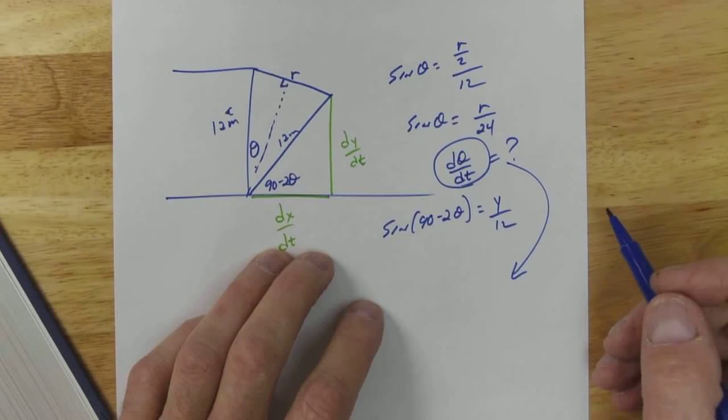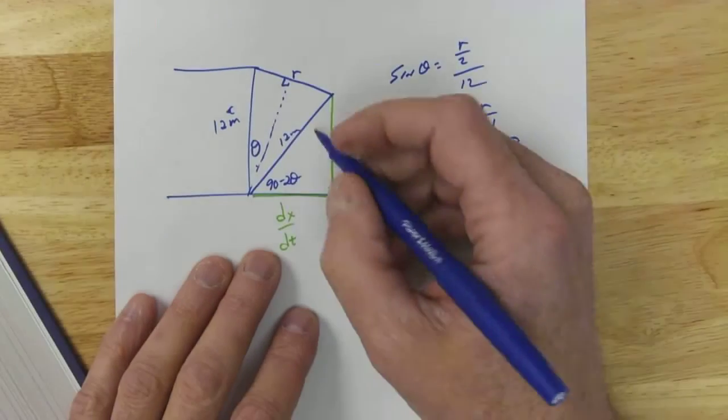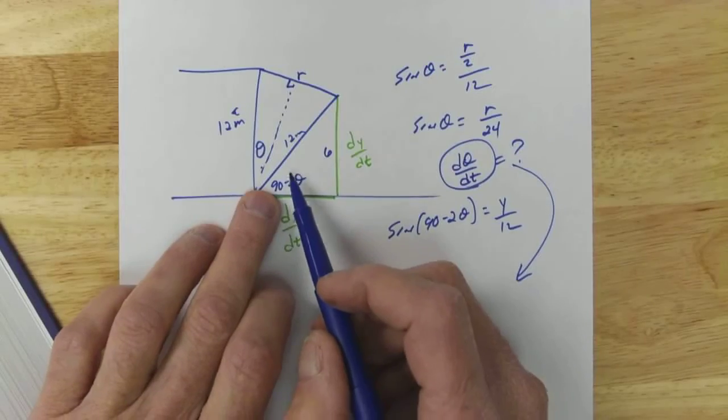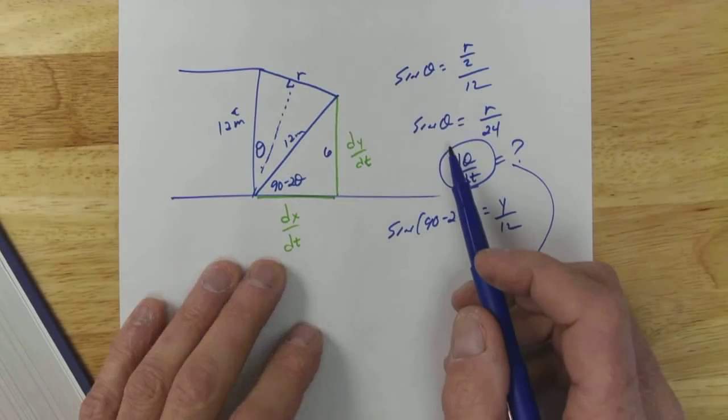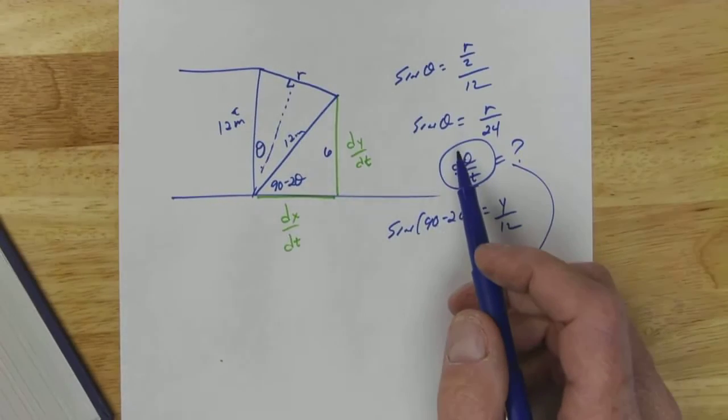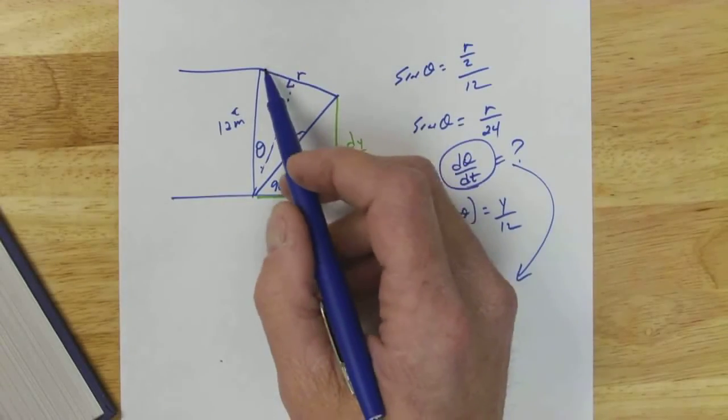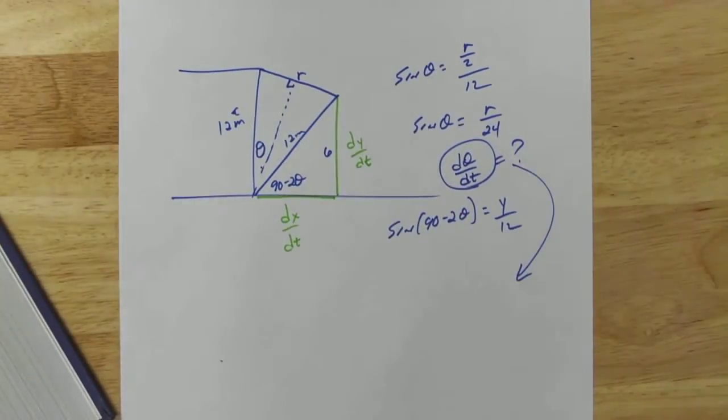And that's even going to involve a challenge because they say when y is 6, when y is 6 we can find this angle and then we can find that angle and then we're going to have to plug that angle in, and then you're going to have to go ahead and find out what r is, what this length is at that time, and then plug that all in. So you can do it, it's just going to be a little bit of a challenge, that's okay.